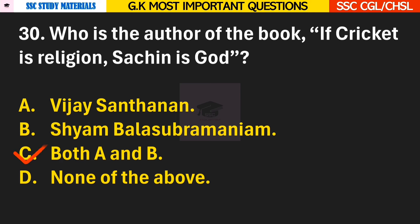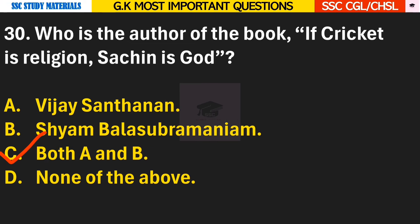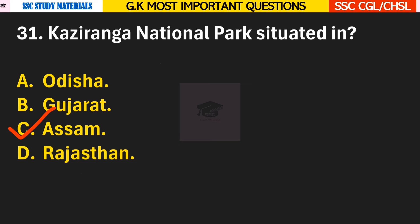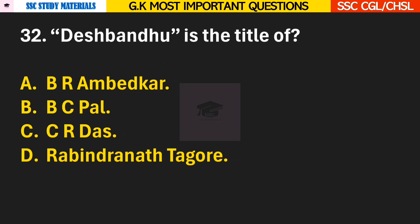Question 30: Who is the author of the book 'If Cricket is Religion, Sachin is God'? Answer C — Both A and B, so Vijay Santhanam and Shyam Balasubramaniam wrote the book. Question 31: Kaziranga National Park is situated in? Answer C — it is situated in Assam. Question 32: Desh Bandhu is the title of? Answer C — it is the title of C.R. Das.